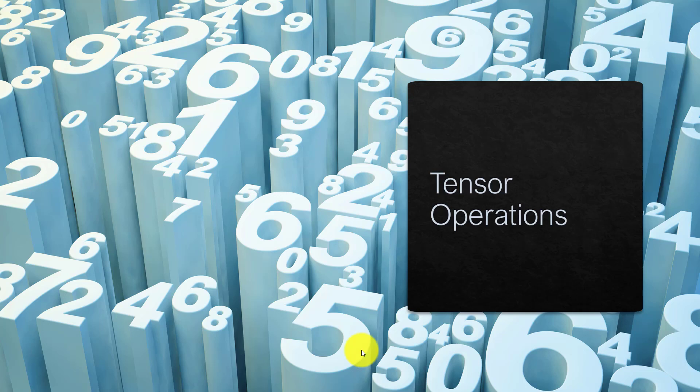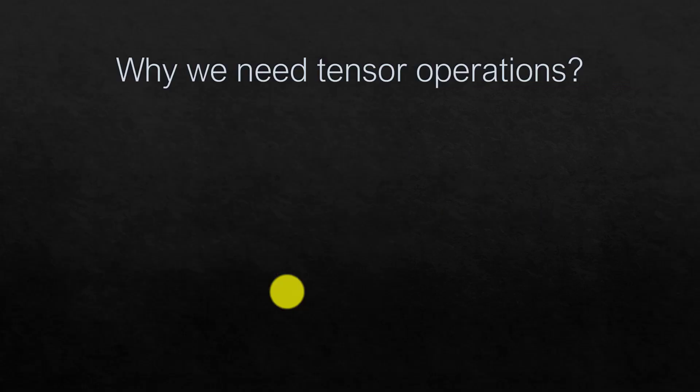In the last video we talked about different kinds of tensors. Now in this video let's talk about why tensor operations are needed. If you work on any kind of neural network, any problem you can solve with a neural network, we can basically show that it's nothing but a series of tensor operations. That's why understanding tensor operations and the different kinds available is very important.